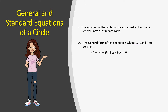The general form is: x squared plus y squared plus dx plus ey plus f equals to zero. Here's an example where we plug in numbers: x squared plus y squared minus 10x minus 6y minus 13 equals to zero. So the three constants are negative 10, negative 6, and negative 13.